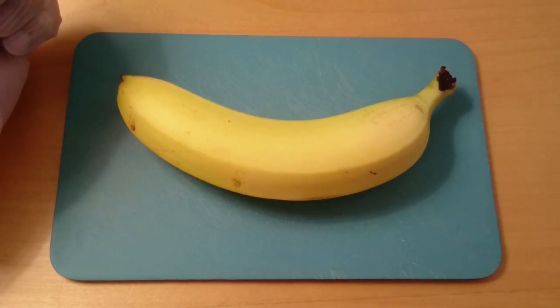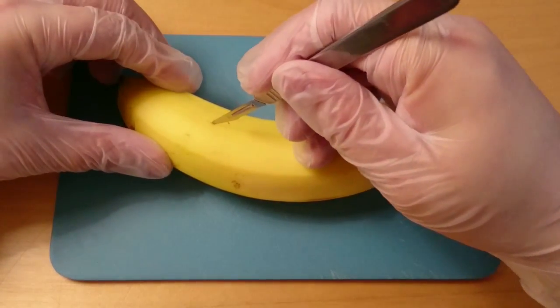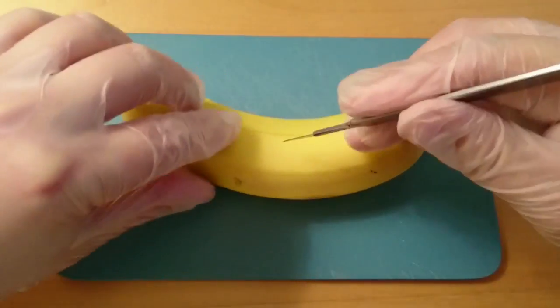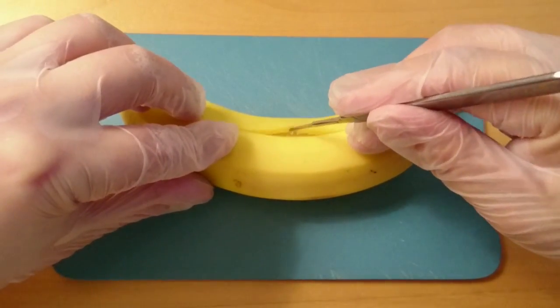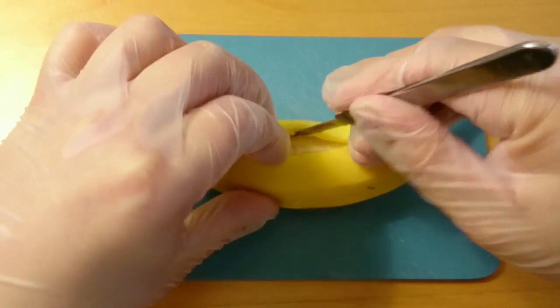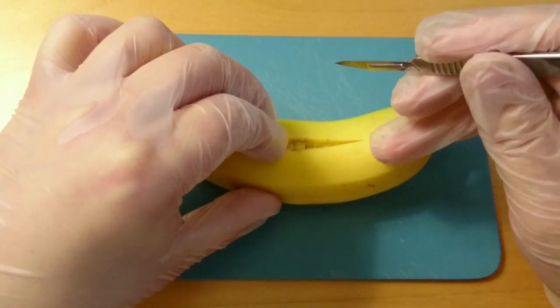Start with preparing the banana, just making an incision and picking out the pulp. This is a little bit tedious, so I'll make a jump cut.